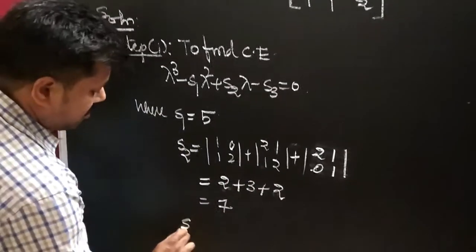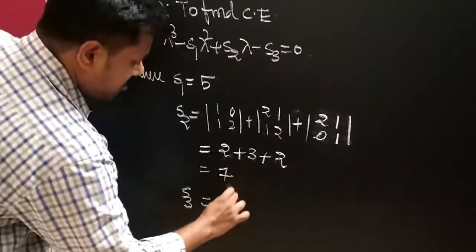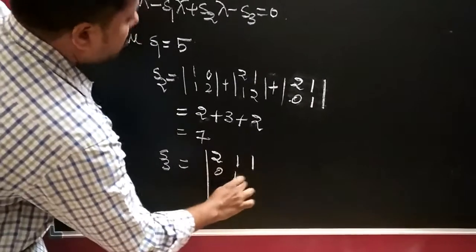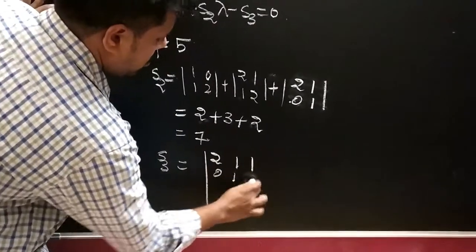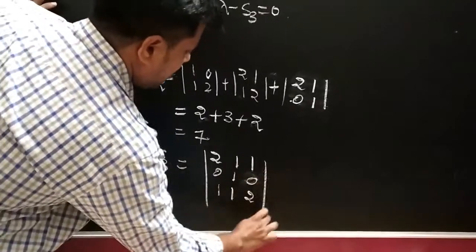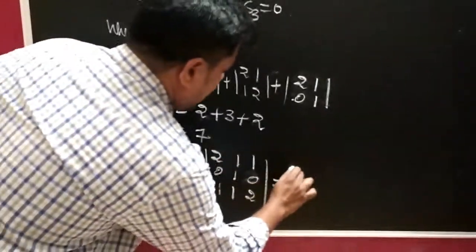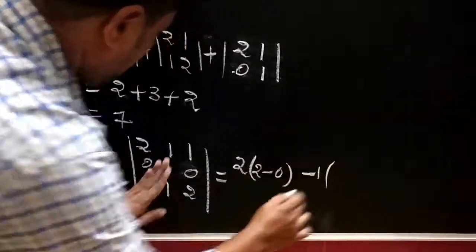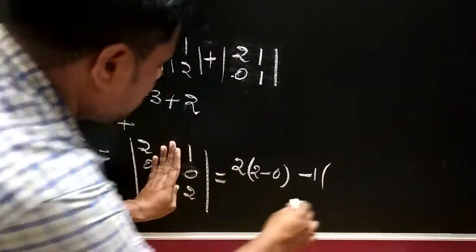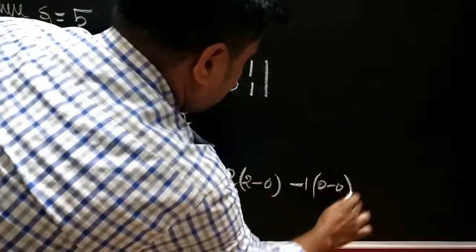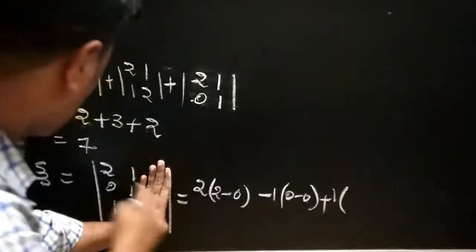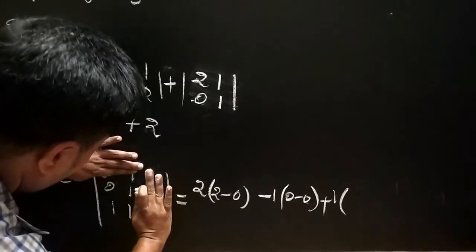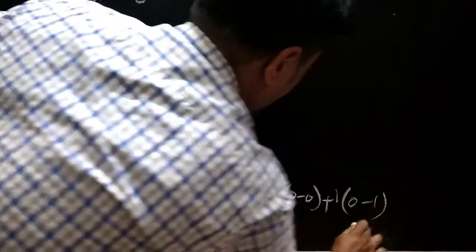The next thing is the determinant of A, which gives S3. The matrix is [[2,1,1],[0,1,0],[1,1,2]]. Expanding the determinant: 2 into (1 times 2 minus 0) minus 1 into (0 times 0 minus 0) plus 1 into (0 times 1 minus 0). Computing each cofactor gives the determinant value.